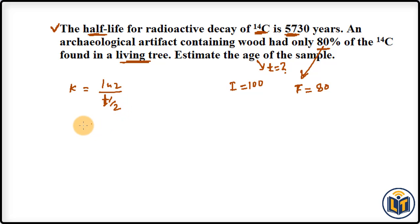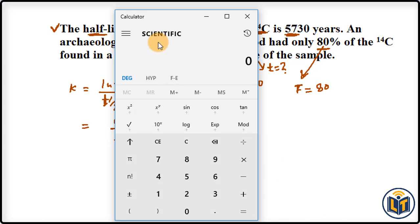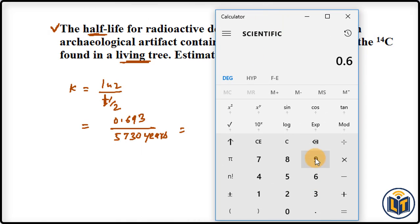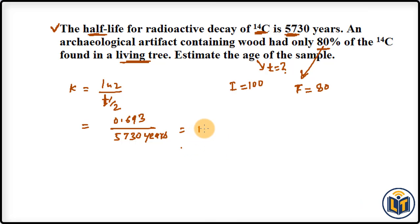We plug in the values: ln2 equals 0.693 and T½ is 5730 years. Doing the calculation, K = 0.693 / 5730, which gives us 1.209 × 10⁻⁴ per year. This is the rate constant value.